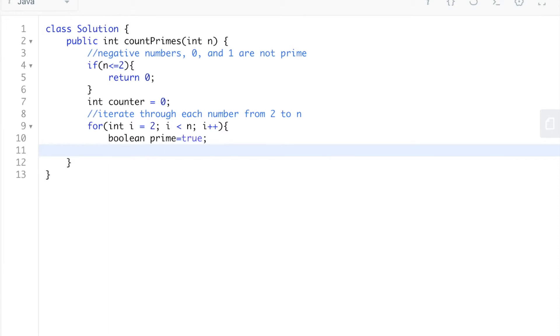We've now created a for loop that's going to iterate through each number all the way from 2 up to n, and we've also initiated a boolean that basically checks whether or not this particular number is prime.